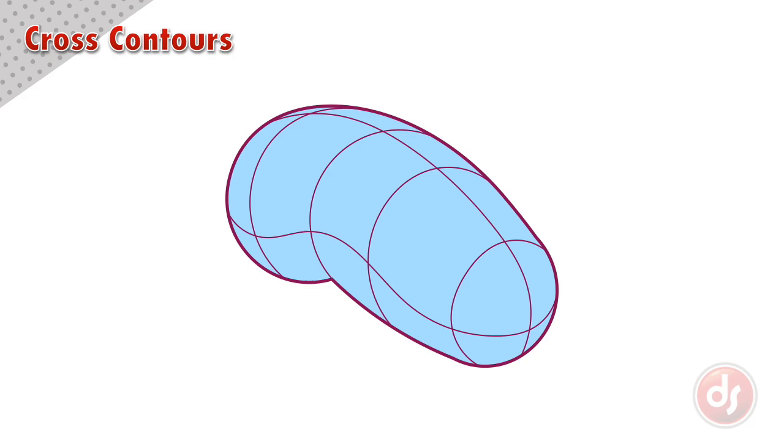When we visualize cross contours, we can think about how the X, Y, and Z line systems would be cutting through the object. Imagining the three line systems is especially helpful with complex or organic forms.